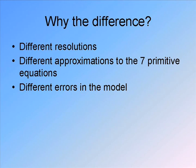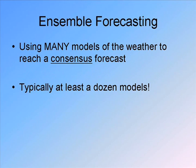The meteorologists have a large number of models all telling us typically similar things, but not exactly the same thing. This is actually part of how modern forecasting is done — a technique referred to as ensemble forecasting. Ensemble refers to a collection, like ensemble TV programs where the whole cast is the star. In the same way, ensemble forecasting is when you make use of many models to reach what we call a consensus forecast.